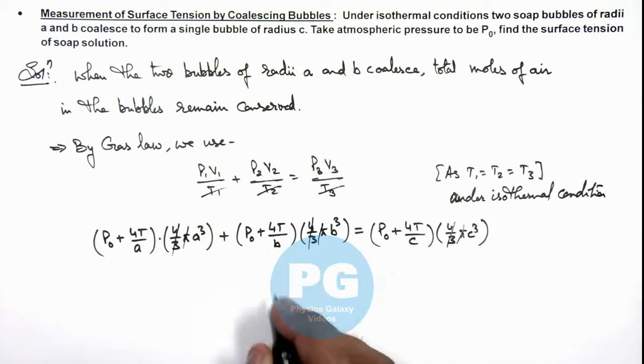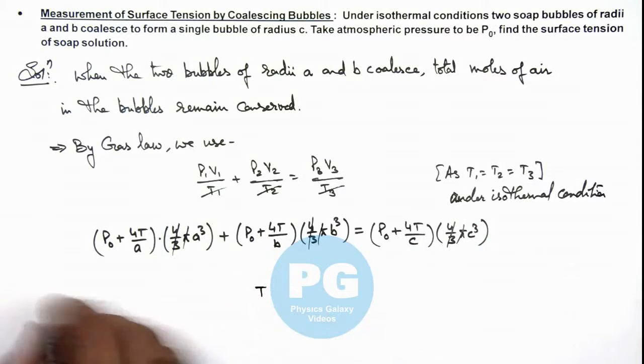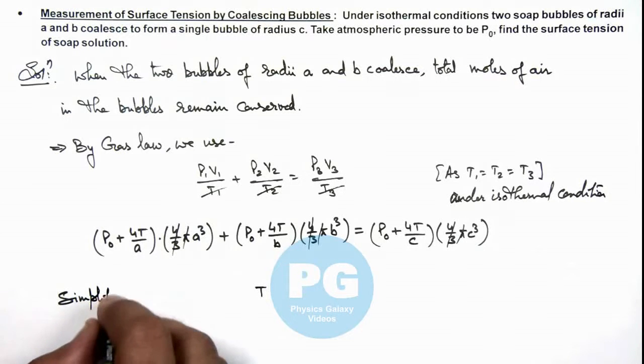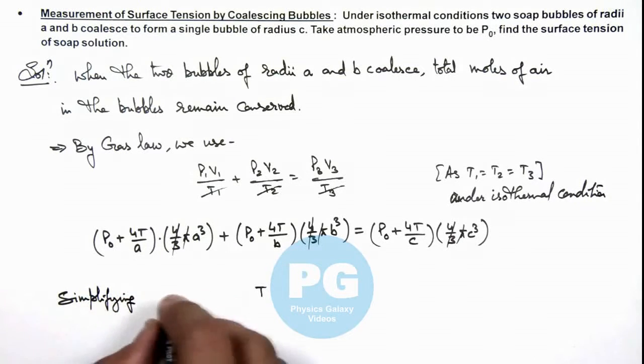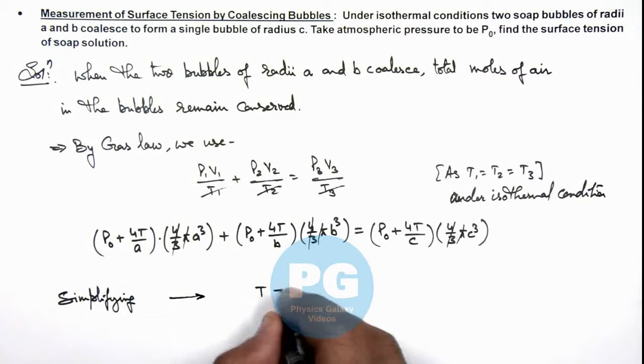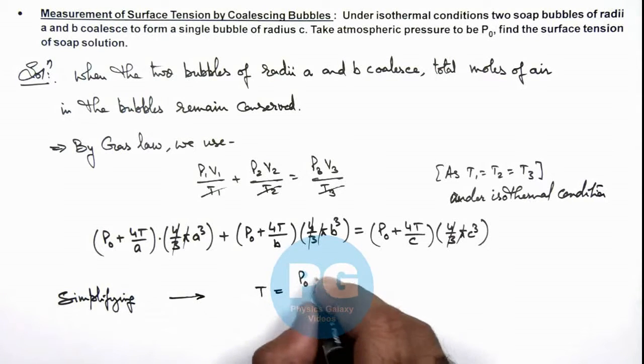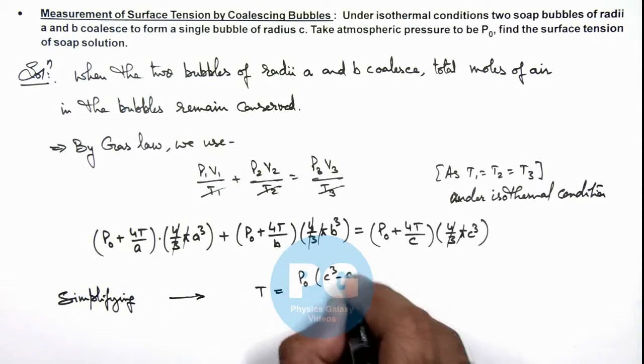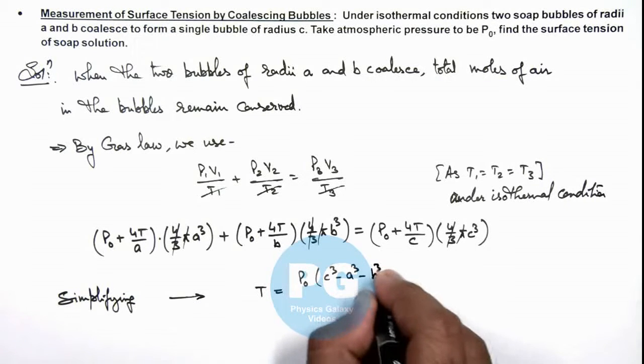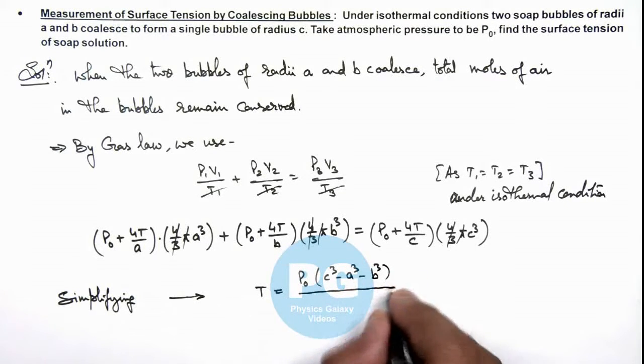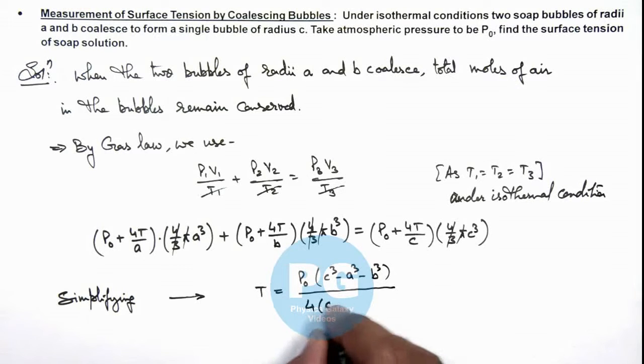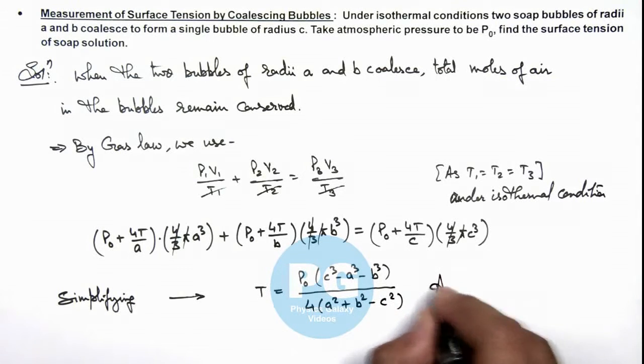Simplifying this relation, we get the value of T. Simplifying, we get T = P₀(c³ - a³ - b³) divided by 4(a² + b² - c²). That is the result of this problem.